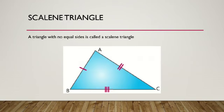Third, scalene triangle — a triangle with no equal sides is called a scalene triangle. In triangle ABC, AB is not equal to BC, which is not equal to CA. That's why triangle ABC is a scalene triangle.